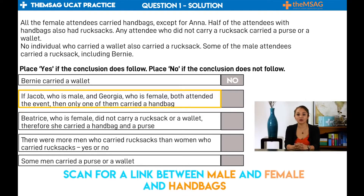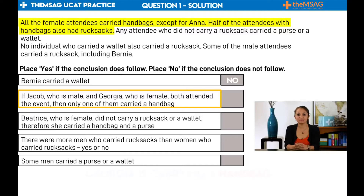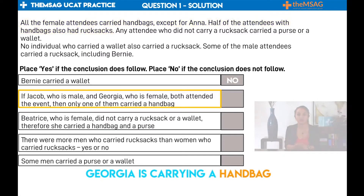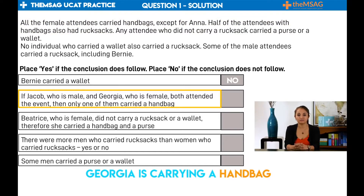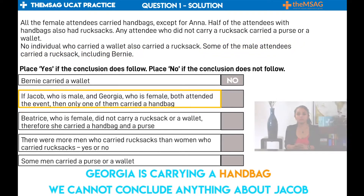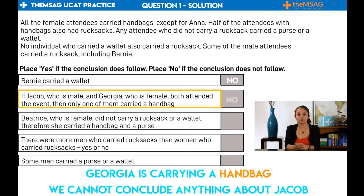Let us start by working out whether Georgia has a handbag. The top line of the text states: all the female attendees carried handbags, except for Anna. From this it can be concluded Georgia, as she is female, will carry a handbag. Now let us work out whether Jacob, who is male, is carrying a handbag. Only the female category is mentioned, not the male category. The only line referring to males is: some of the male attendees carried a rucksack, including Bernie — but there is no mention of handbag. Therefore we cannot conclude anything about Jacob and whether he has a handbag. We know Georgia has a handbag, but not whether they both have one. Therefore, no — we cannot say that the conclusion follows, since we only know for definite that Georgia has a handbag.